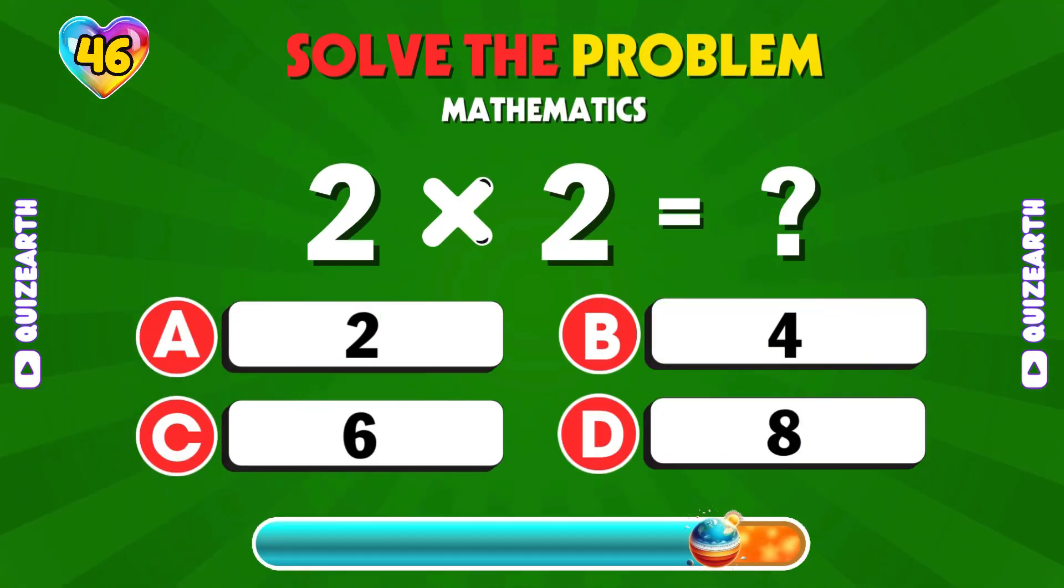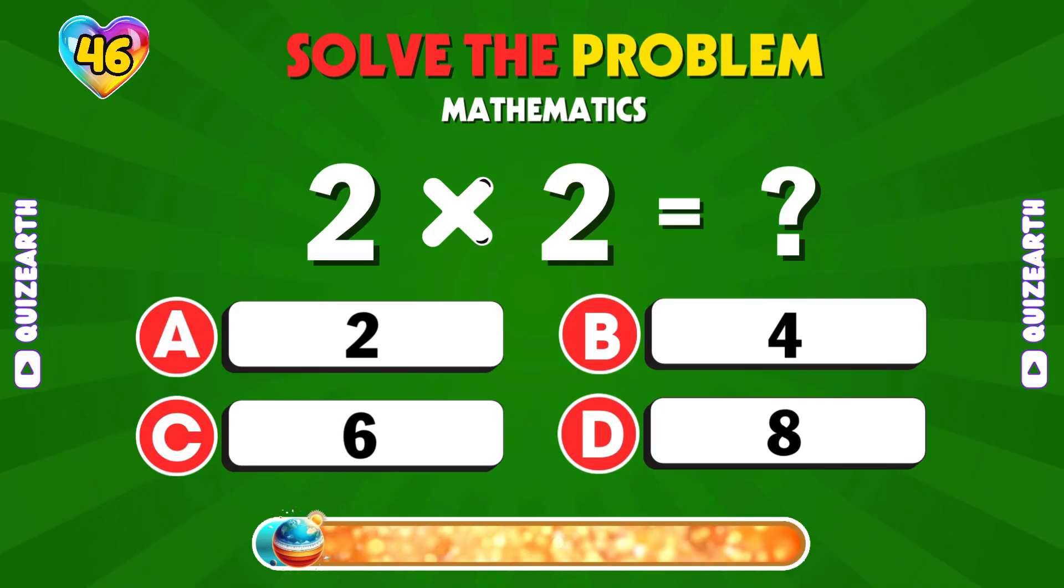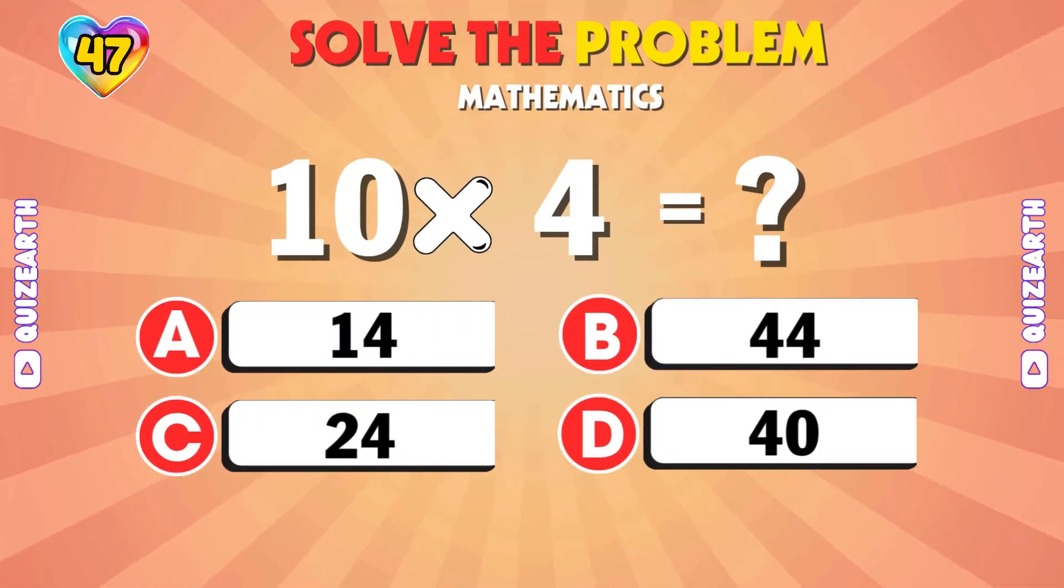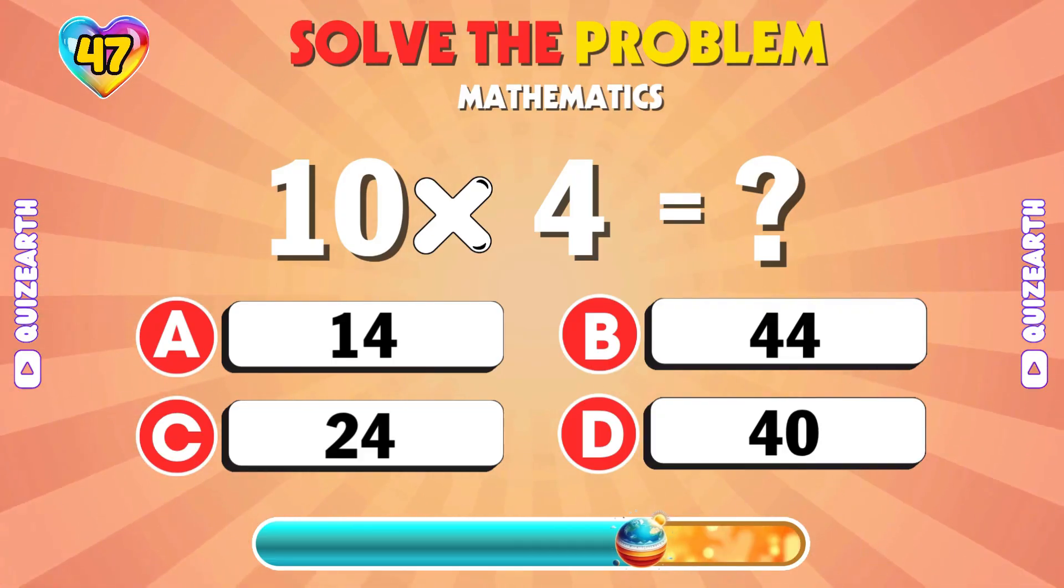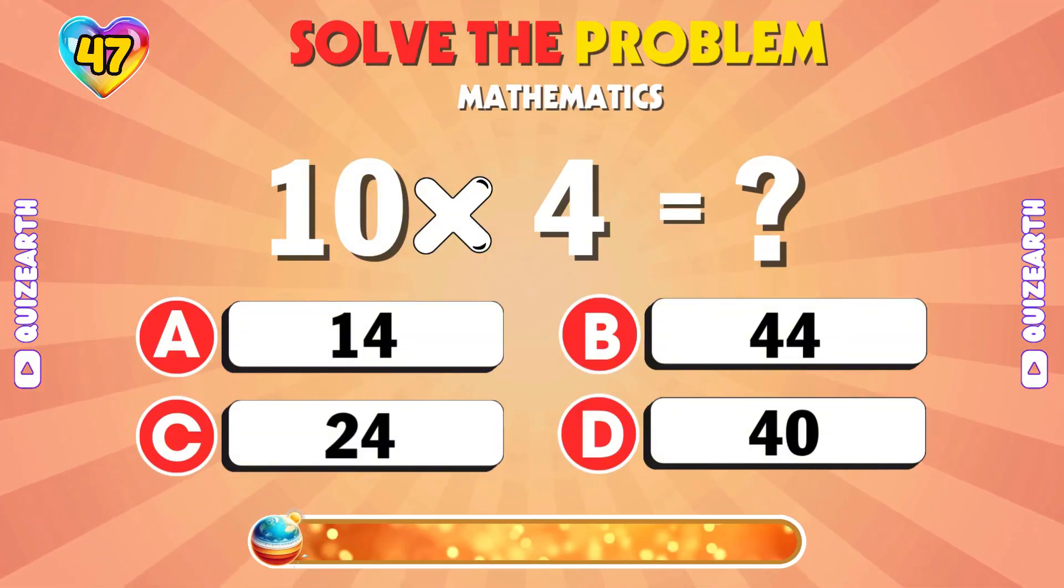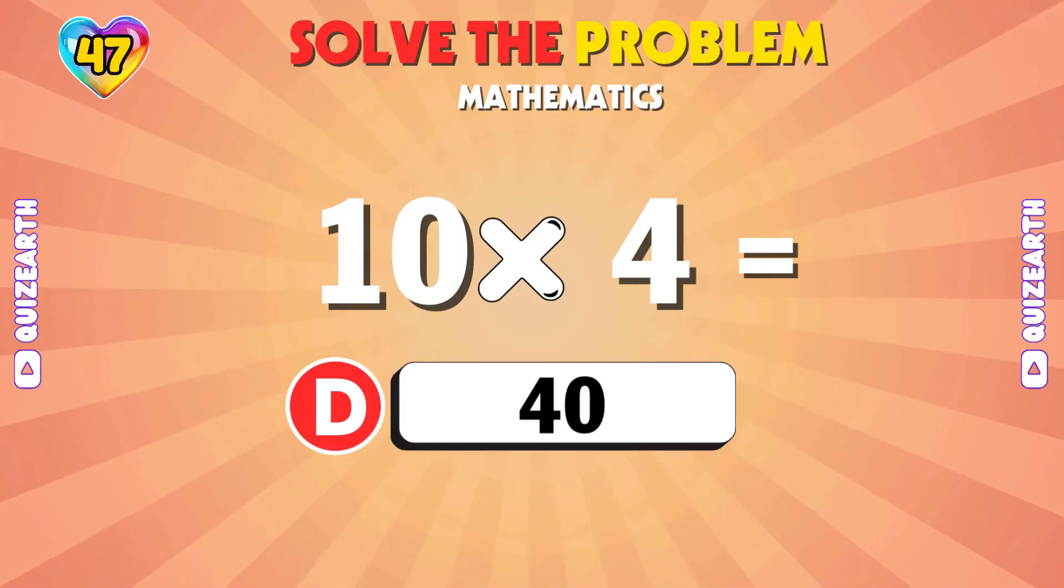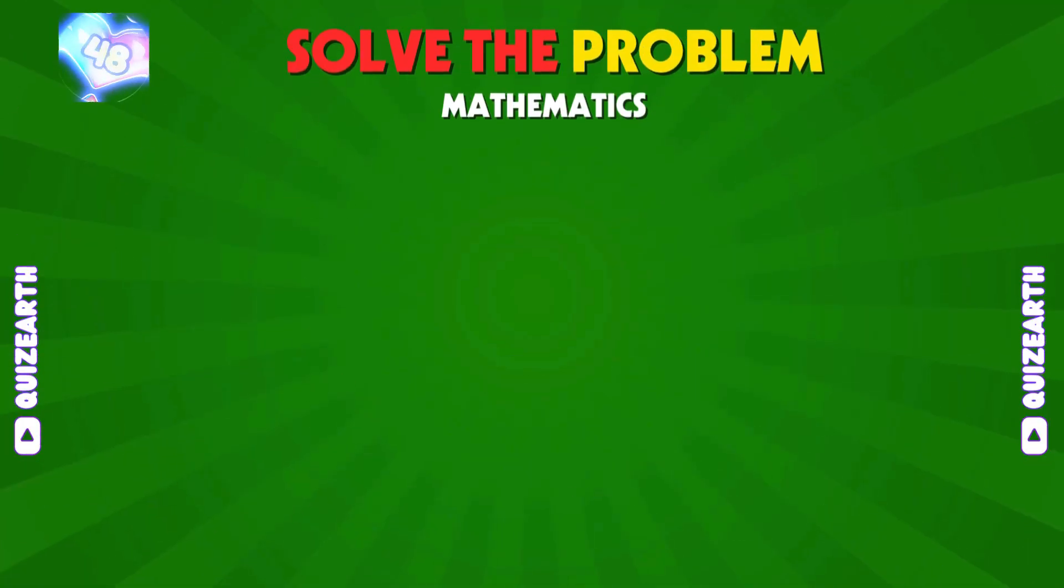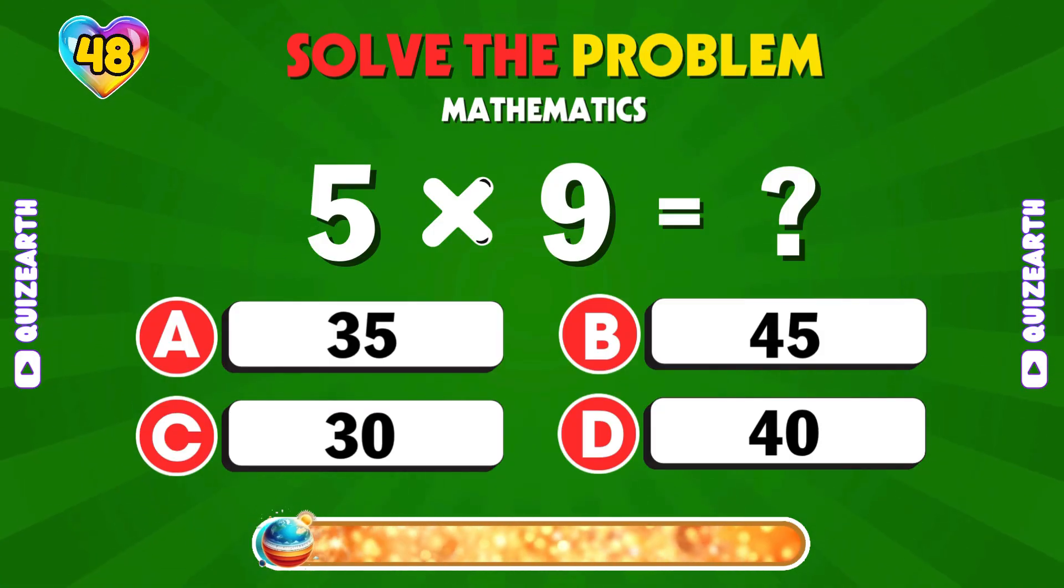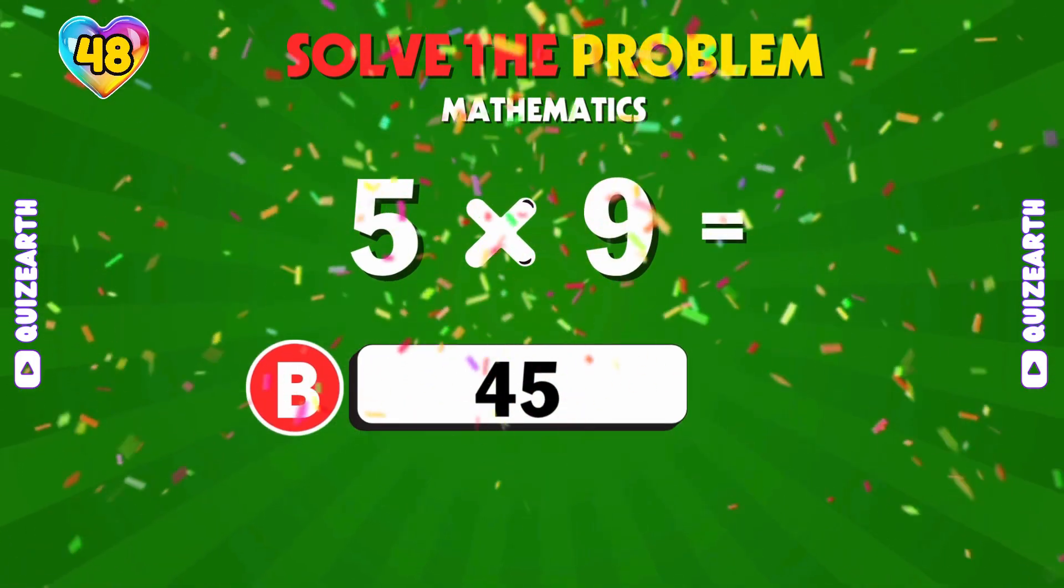2 times 2. Final answer, 4. Answer fast, 10 times 4. 40. Name this result, 5 times 9. That's 45.